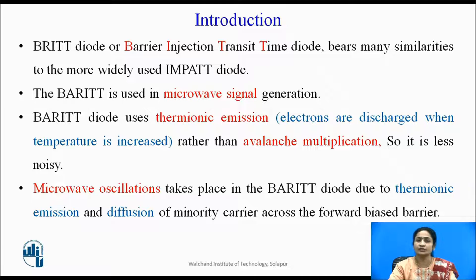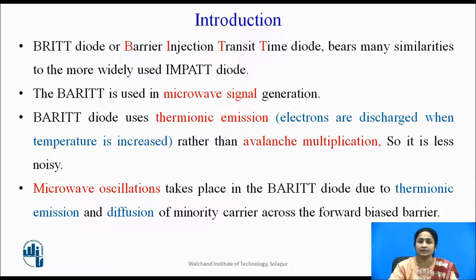The BARITT diode is usually used for microwave generation — to generate signals which are in the microwave range, we use BARITT diodes. The BARITT diode uses the principle of thermionic emission rather than avalanche multiplication. Thermionic emission means electrons are discharged when temperature is increased. The BARITT diode is used as a microwave oscillator because of thermionic emission and the diffusion of minority carriers across the forward-biased junction, which causes microwave oscillations.